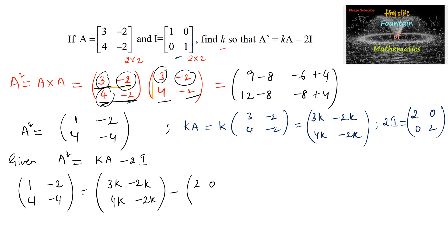Minus 2, 0, 0, 2. So if we simplify the right-hand side, 3K minus 2 corresponding elements subtraction, 3K minus 2 we can write, and here minus 2K, and here 4K minus 0 is 4K, and minus 2K minus 2.